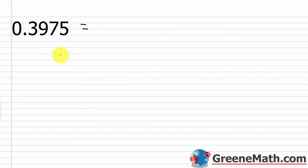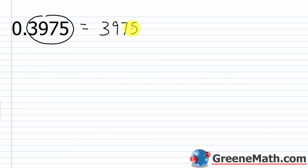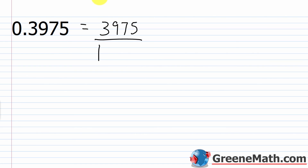What about 0.3975? I take the decimal part — 3975 — and write that in the numerator. For the denominator, I put a 1 and count the decimal places: one, two, three, four. So I follow the 1 with four zeros — that's 10,000. The answer is 3,975 over 10,000.